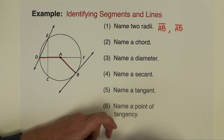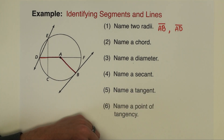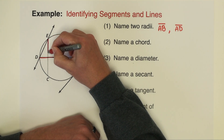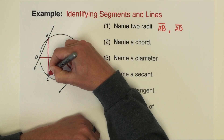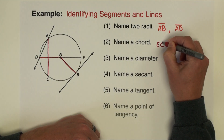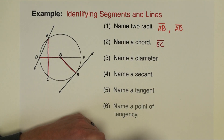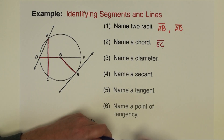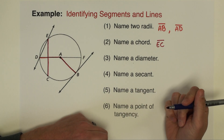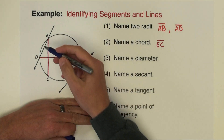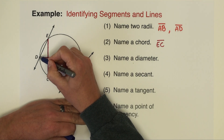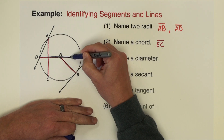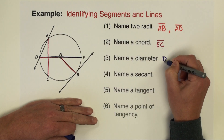Next we want to name a chord — any chord will do. A chord just has to be a segment whose endpoints are on the circle. So right here, EC is a chord. Next we want a diameter. A diameter has to be a chord that goes through the center of the circle, and there's only one such chord. It starts at point D, goes through point A, and onto F. So we're going to name that DF.